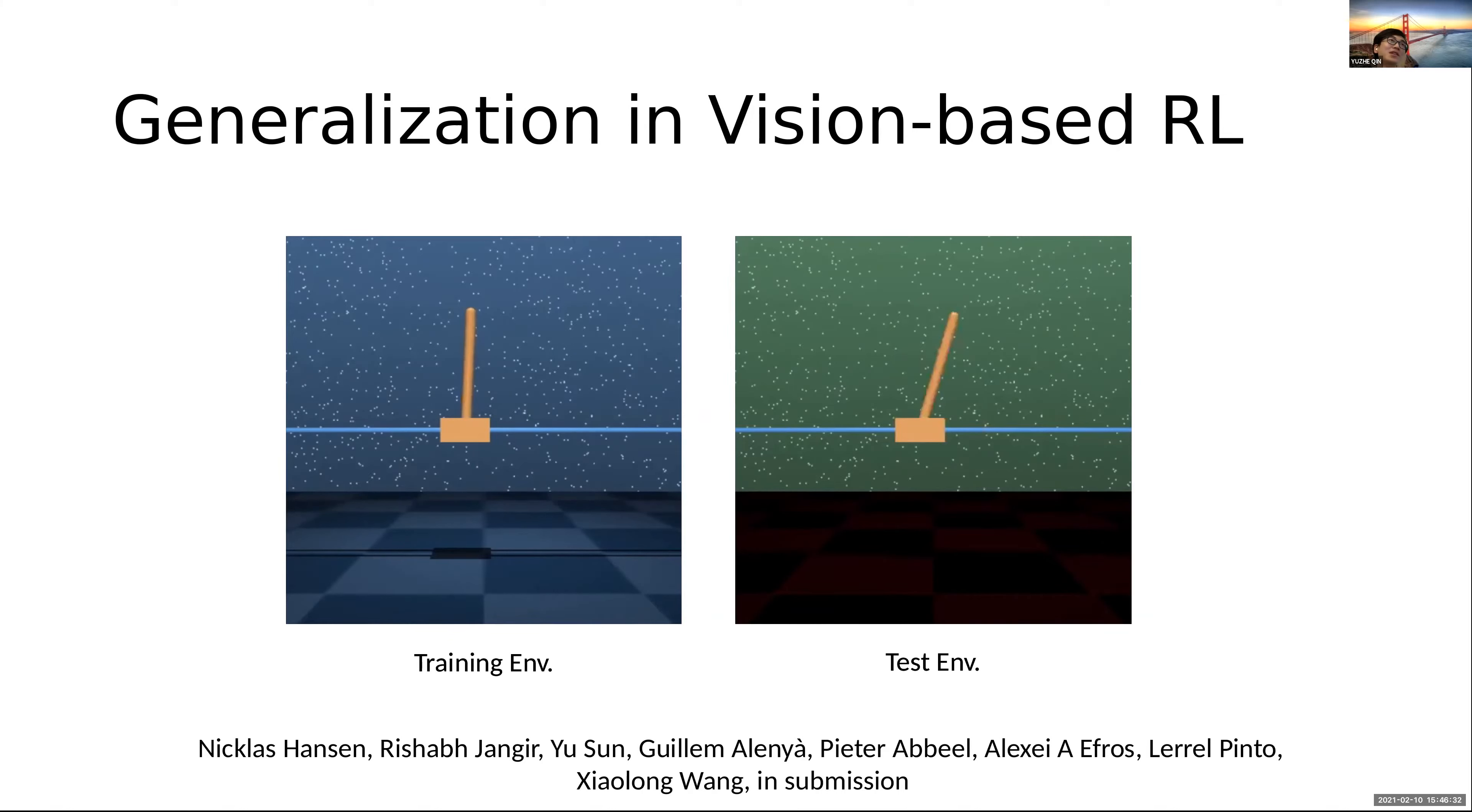As you can see in the training environment, the background is totally different with the test environment. However, by using some kind of transfer techniques, the learned agent in the left figure can be transferred into the right figure with the image only observation.